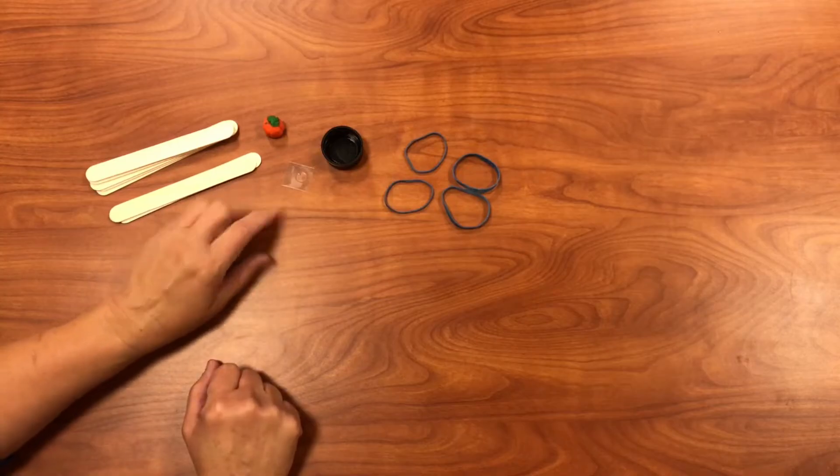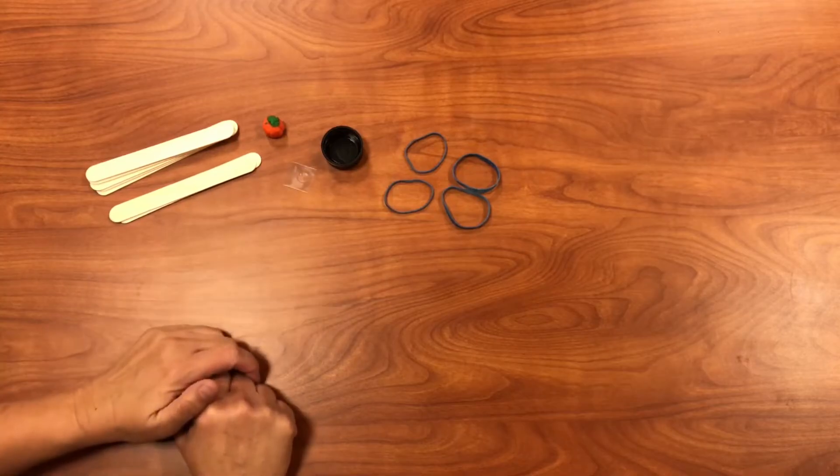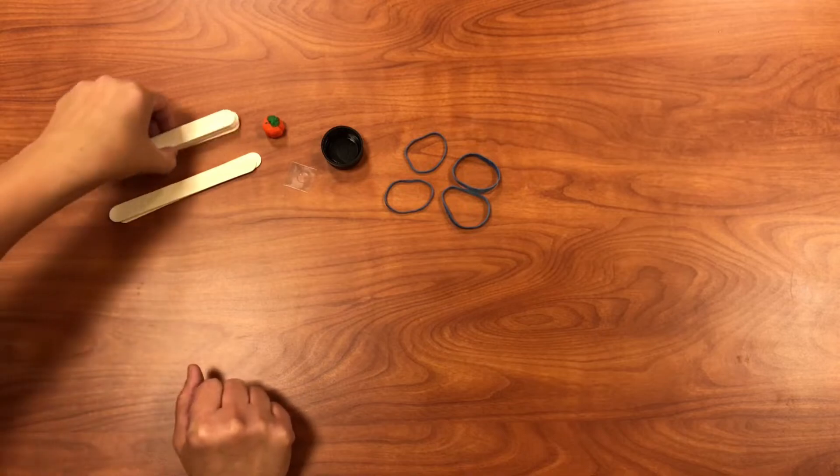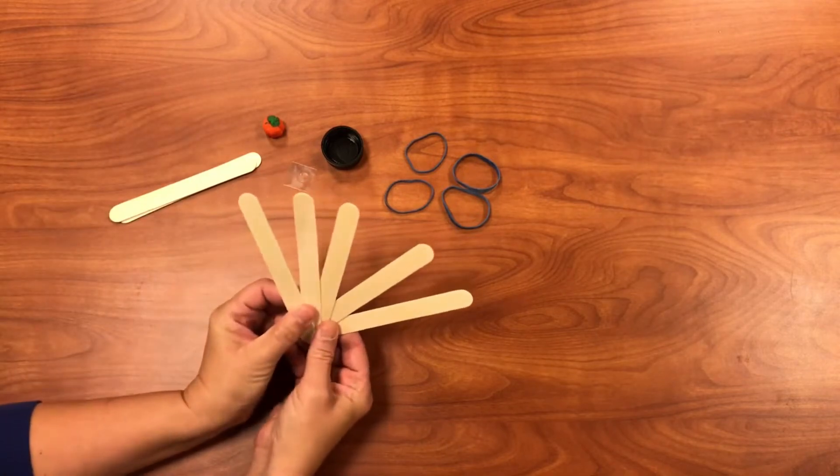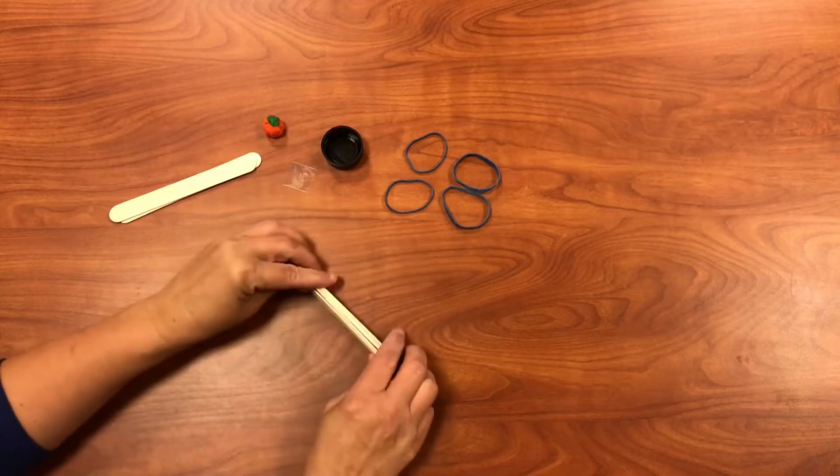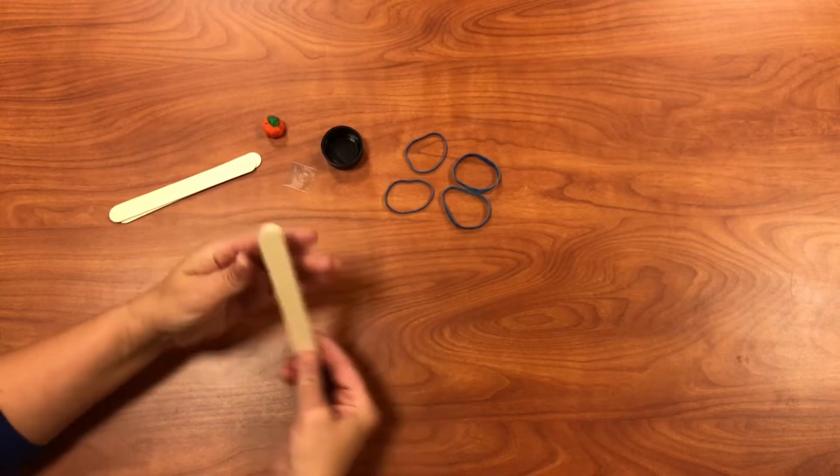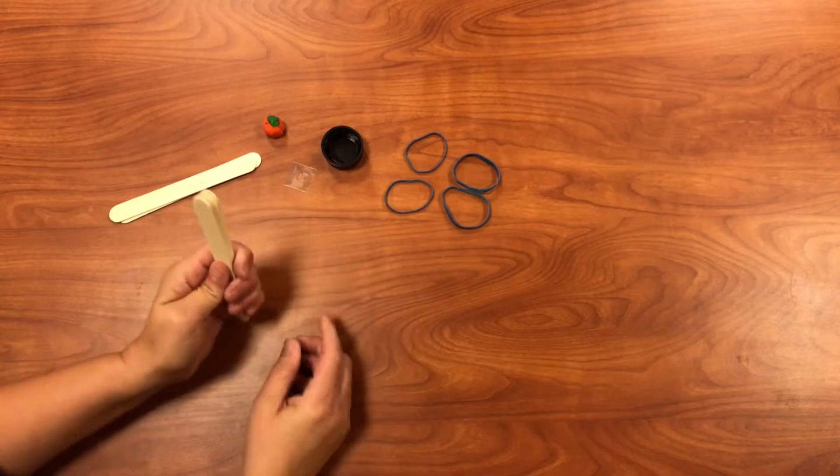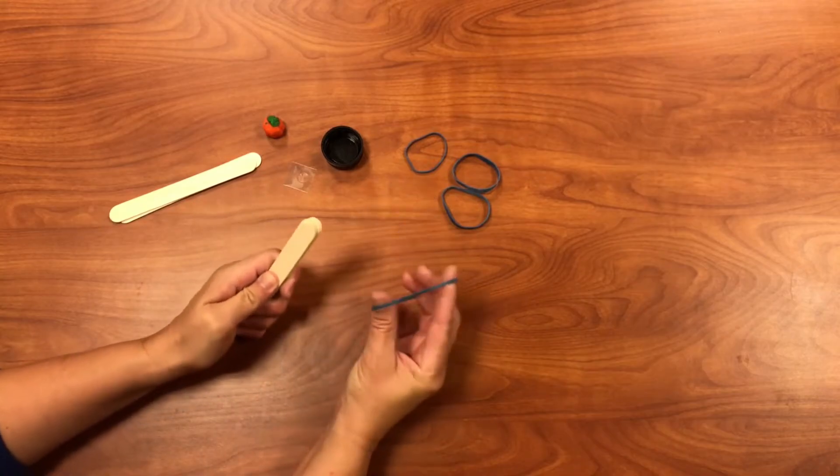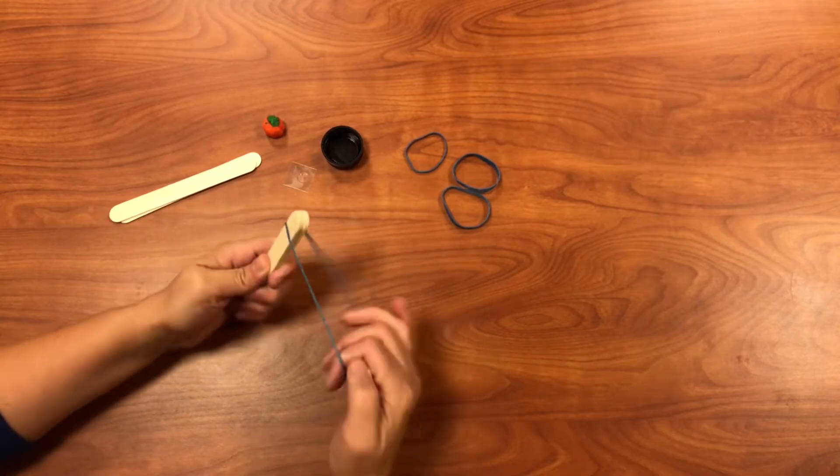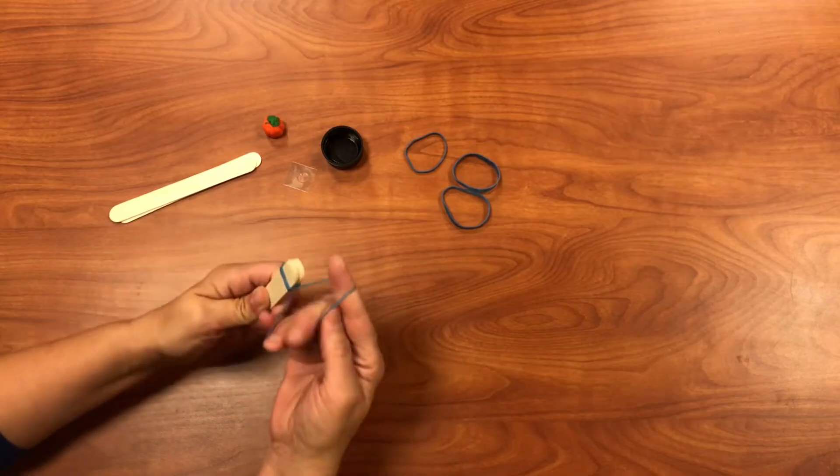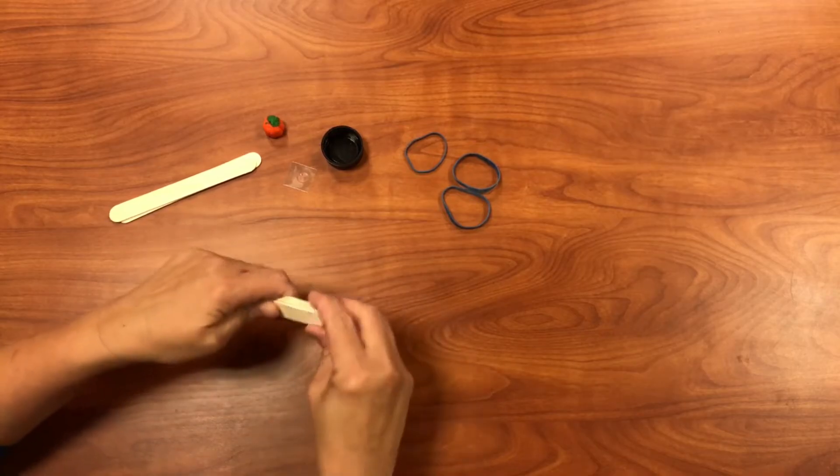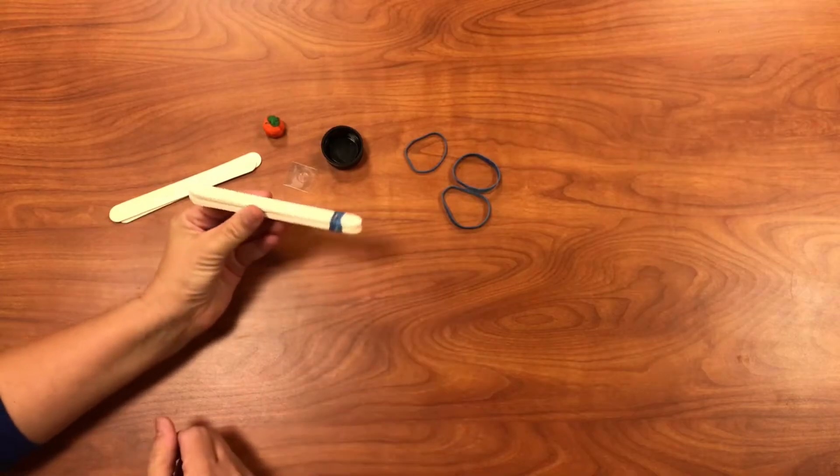So first we're going to start by taking five of your craft sticks and stacking them together nicely. You're going to grab one of your rubber bands and just start wrapping it around the edge to stick them together. So it's going to look like this: five sticks, one rubber band.